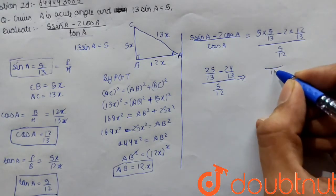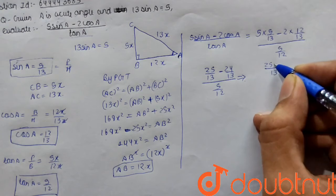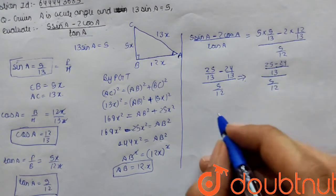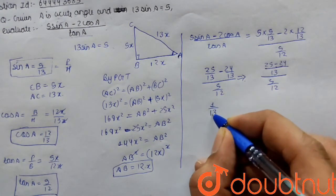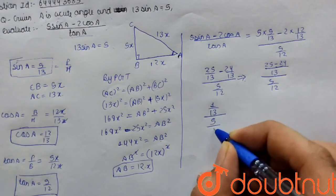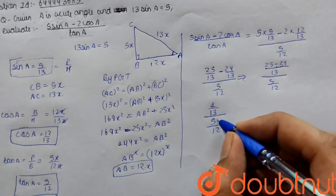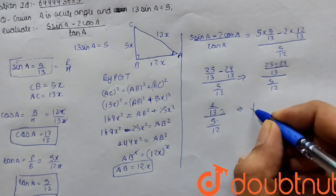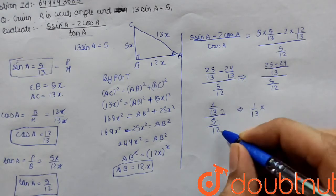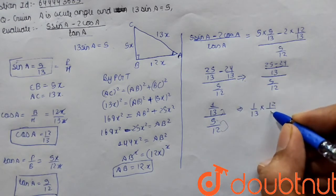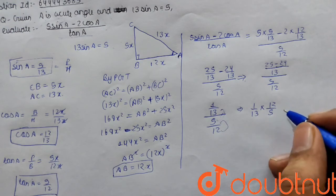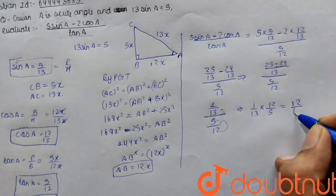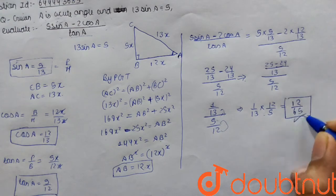Taking the LCM of 13: 25 minus 24 over 13, divided by 5/12. That simplifies to 1/13 divided by 5/12, which equals 1/13 multiplied by 12/5, giving 12/65. This is our required answer.